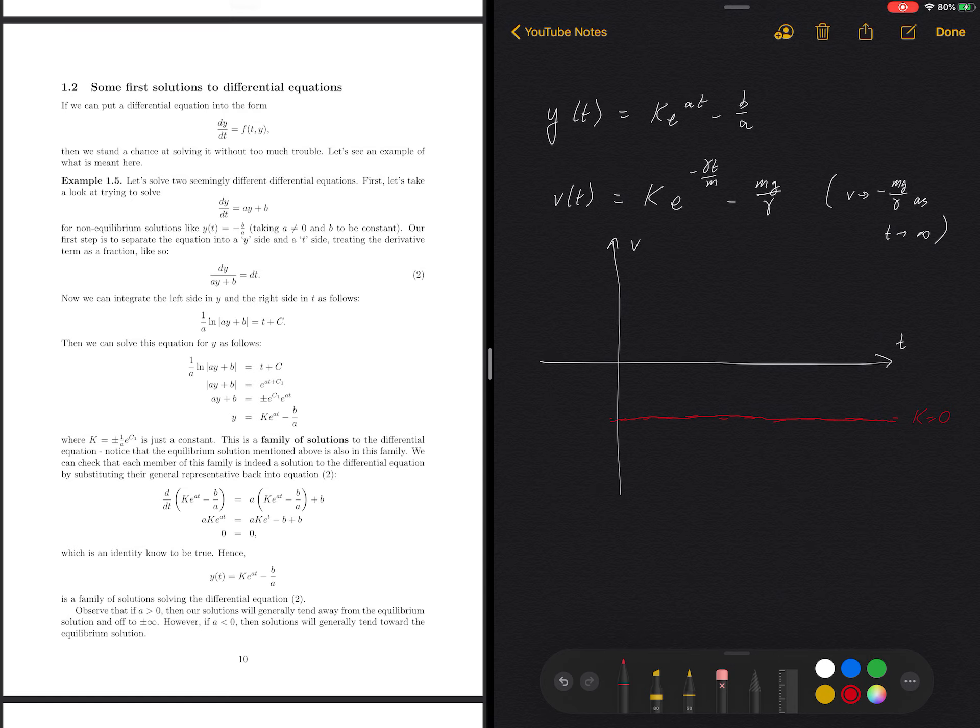This is the case when k is equal to zero. So this is minus mg over gamma. Okay, so we actually do have an honest-to-goodness solution that is a constant. And we talked about those. Those were what we called equilibrium solutions.